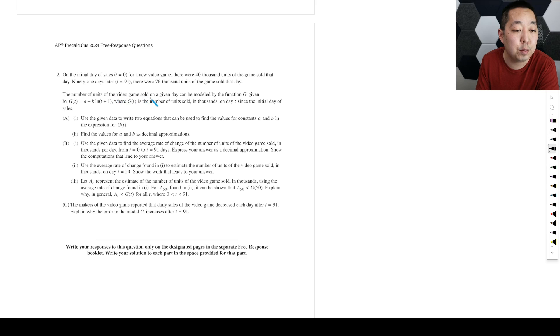The number of units in the video game sold in a given day can be modeled by this function, where G of T. Use the given data to write two equations that can be used to find the value of the constants A and B in the expression. So this one is really just about setting up the information here. Now, the number of units sold in thousands. Think about the thousand as part of the units of it here.